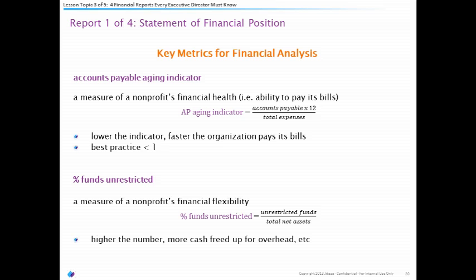The last metric is one of the most important: percent funds unrestricted. Along with months cash on hand, this is really about how flexible your organization is. Do you have cash for overhead and necessary investments? Do you have cash to be creative and try new ideas? This is a measure of the general health of your organization. The more funds tied up in restrictions, the more difficult it is to manage. We frequently work with clients trying to improve their percent of funds unrestricted.